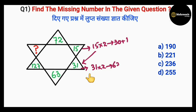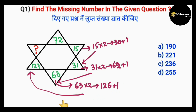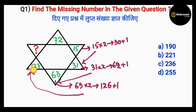31 into 2 equals 62, sorry — plus 1 gives us the next number, 63. We apply the same pattern to 63: 63 into 2 equals 126, plus 1 equals 127, which is our next number. That means we've cracked the pattern — multiply the given number by 2, then add 1, and we get the next number.